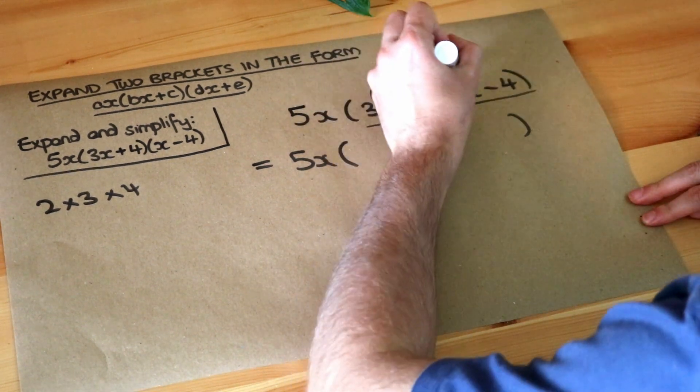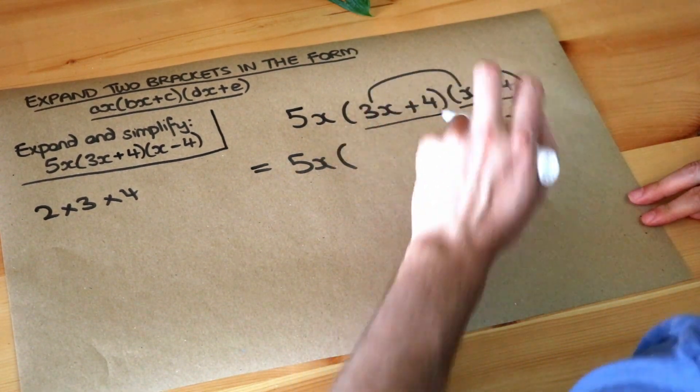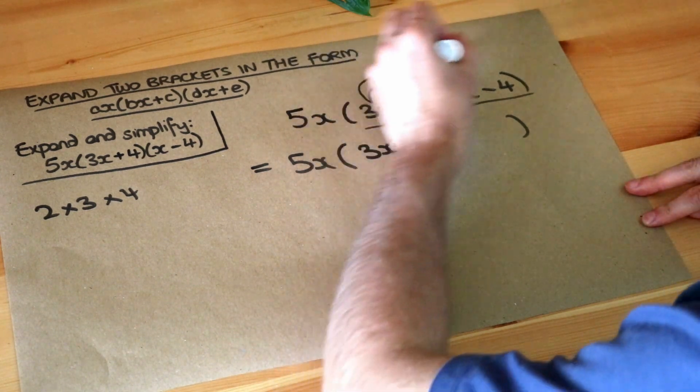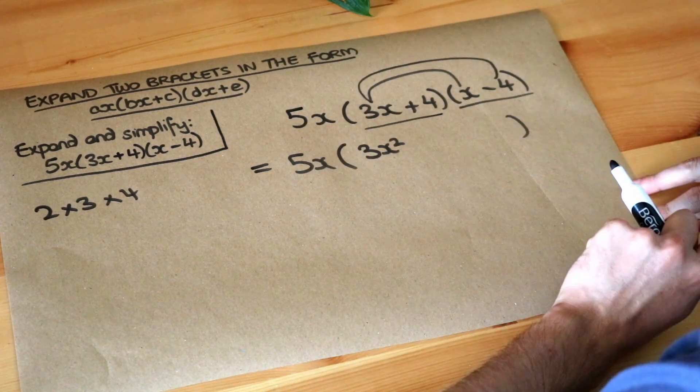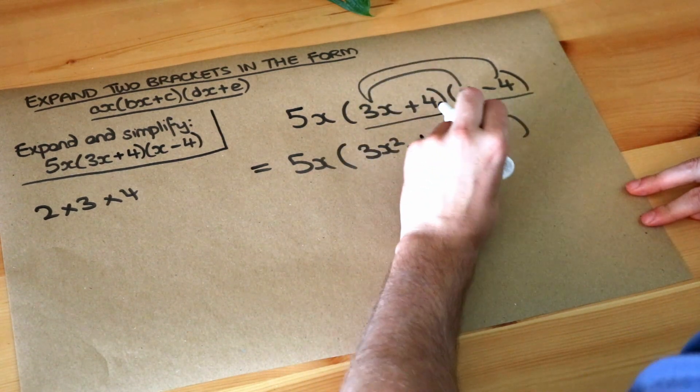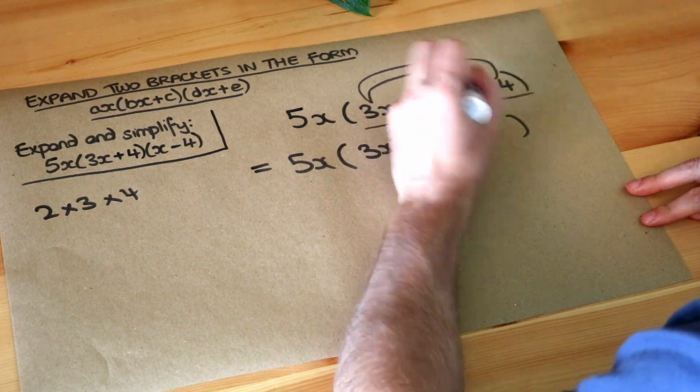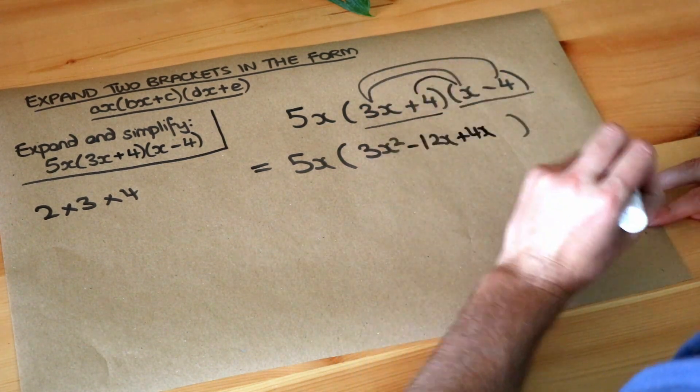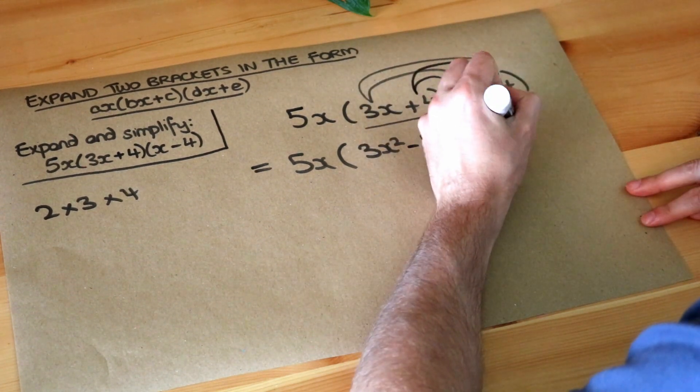So the 3x times each of the things in the second bracket: 3x times x is 3x squared. Then we do the 3x times the second thing, so 3x times minus 4 is minus 12x. Then we do the second thing, the 4 times each of the things in the second bracket. So the 4 times the x is 4x, and the 4 times minus 4 is minus 16.